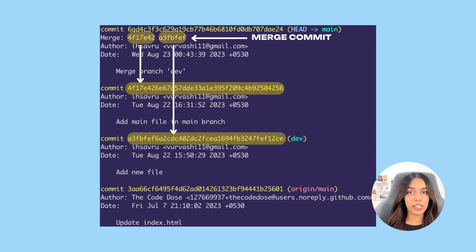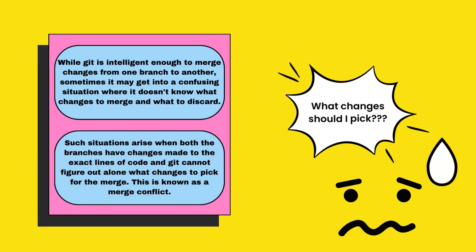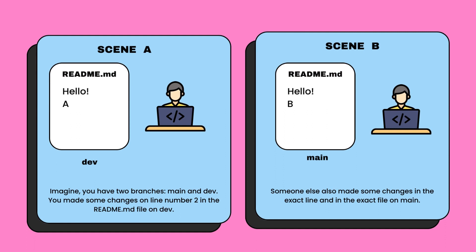If you're trying the commands alongside this video, you may have come across a merge conflict. A merge conflict occurs when the changes in main and the changes in dev are conflicting — meaning you probably changed the same line of code in both branches and git cannot identify which change to pick for the final merge commit. For example, if you created a comment on the same line in main and then a different comment on the same line in dev, git will ask you to pick which change you want to keep before proceeding.